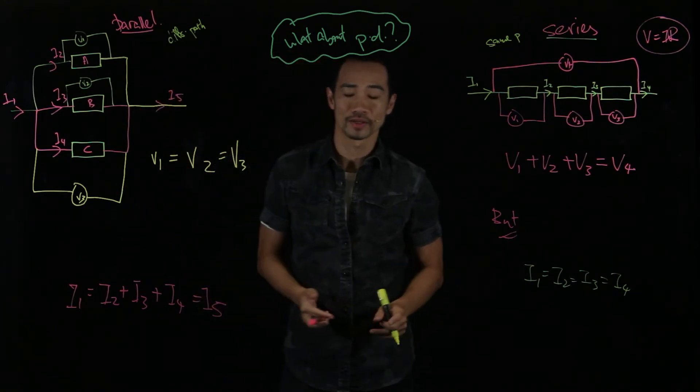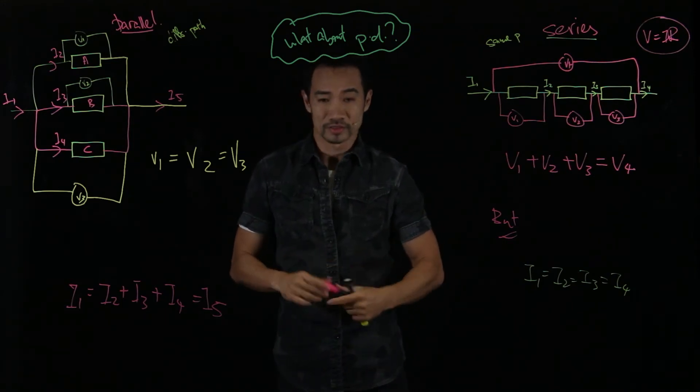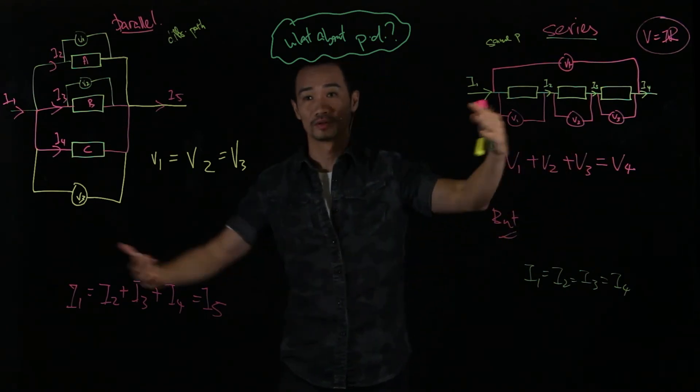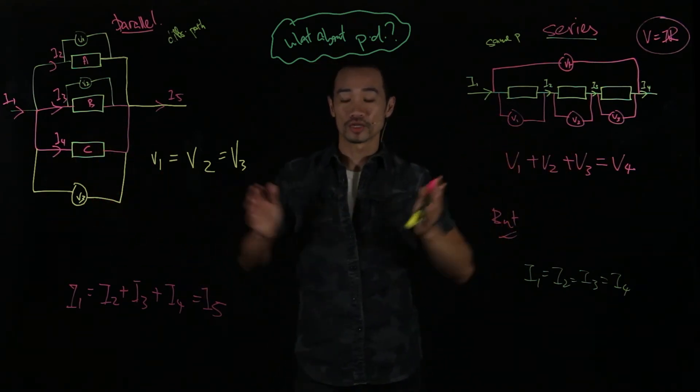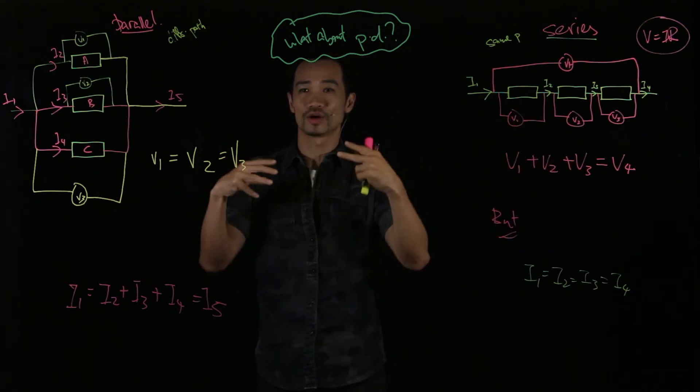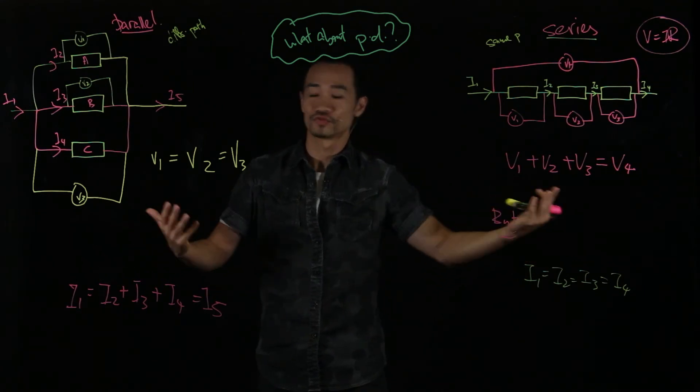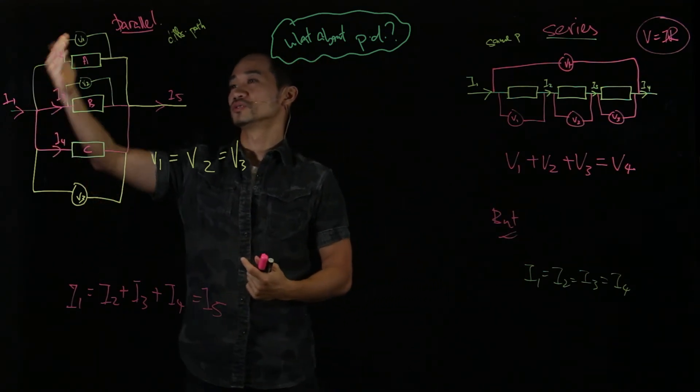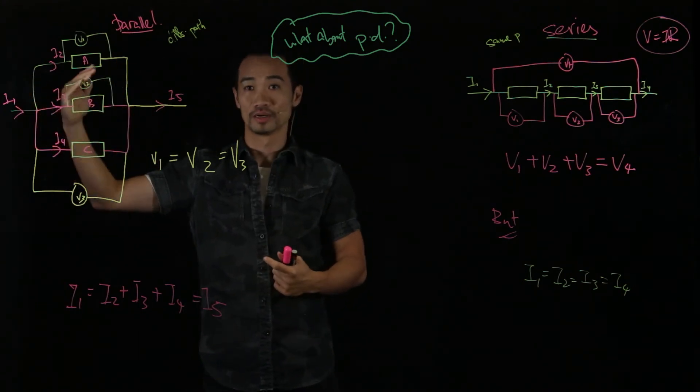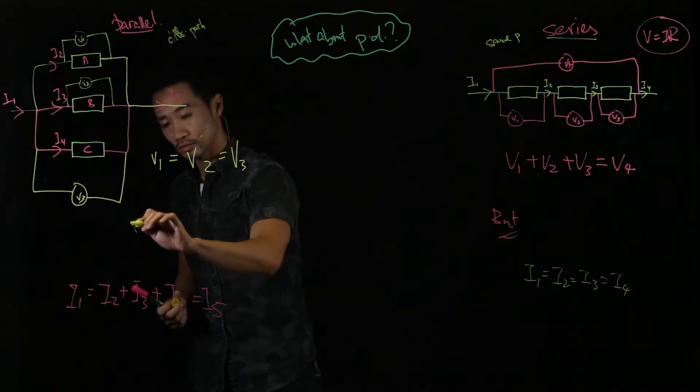So this is a similar concept. Some of you might play Nintendo DS or racing games, and sometimes they hit a junction, it goes different paths. But no matter which path you take, technically you are using the same amount of effort. Then the difference will be, are you going to go faster or slower? But the amount of effort is actually the same.